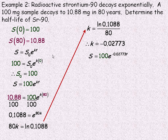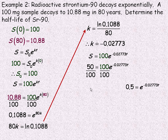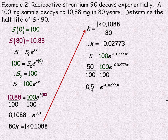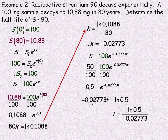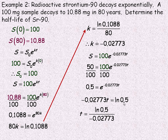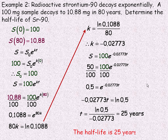Now we find the half-life. We started with 100 mg, so at the half-life the amount is down to 50 mg. Substituting 50 for s: 50 = 100 · e^(−0.02773t). Dividing by 100 gives 0.5 = e^(−0.02773t), so −0.02773t = ln(0.5). Dividing by −0.02773 gives t ≈ 25 years. The half-life of strontium-90 is about 25 years.